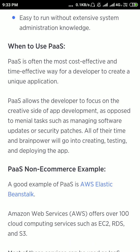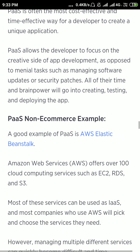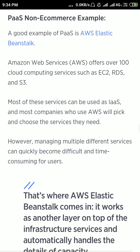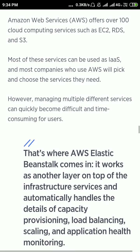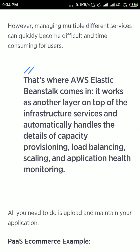All of their time and brain power will go into creating, testing, and deploying the app. As an example of PaaS, AWS Elastic Beanstalk — Amazon Web Services offers over 100 cloud computing services such as EC2, RDS, and S3. Managing multiple different services can quickly become difficult and time-consuming, and that's where AWS Elastic Beanstalk comes in. It works as another layer on top of the infrastructure services and automatically handles the details of capacity provisioning, load balancing, scaling, and application health monitoring.